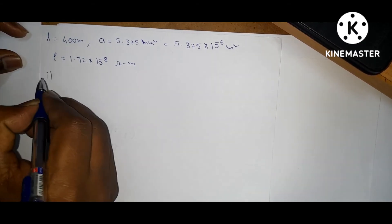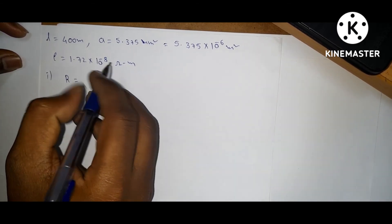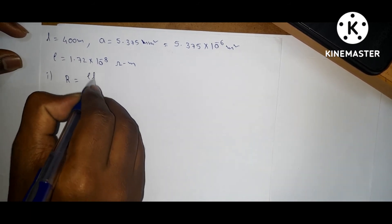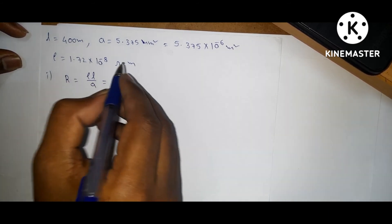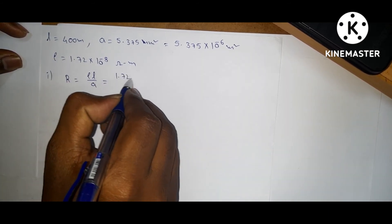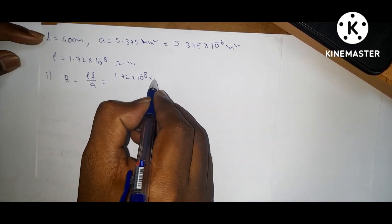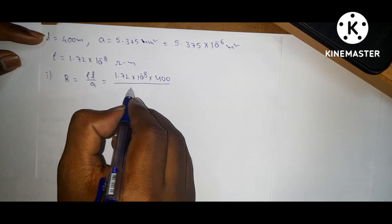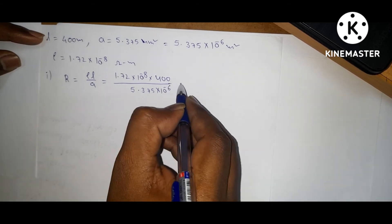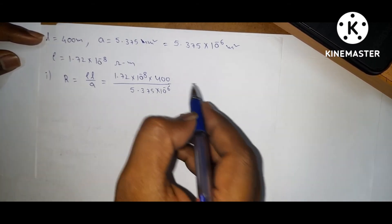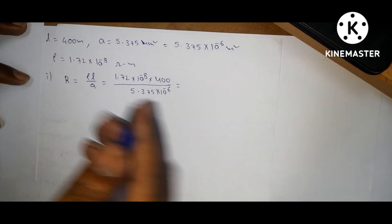For question one, find the resistance of the copper wire using R is equal to rho L by A. Substituting: 1.72 into 10 power minus 8 into 400, divided by 5.375 into 10 power minus 6. Solving this equation gives resistance value of 1.28 ohms.